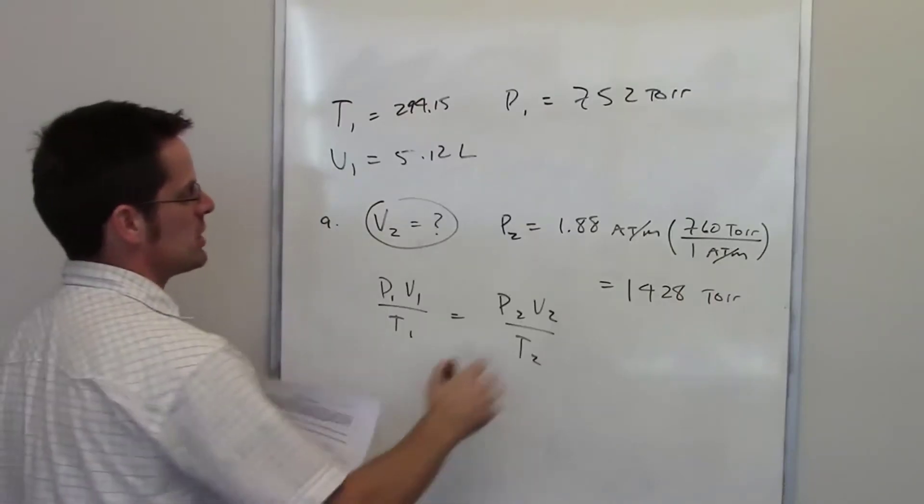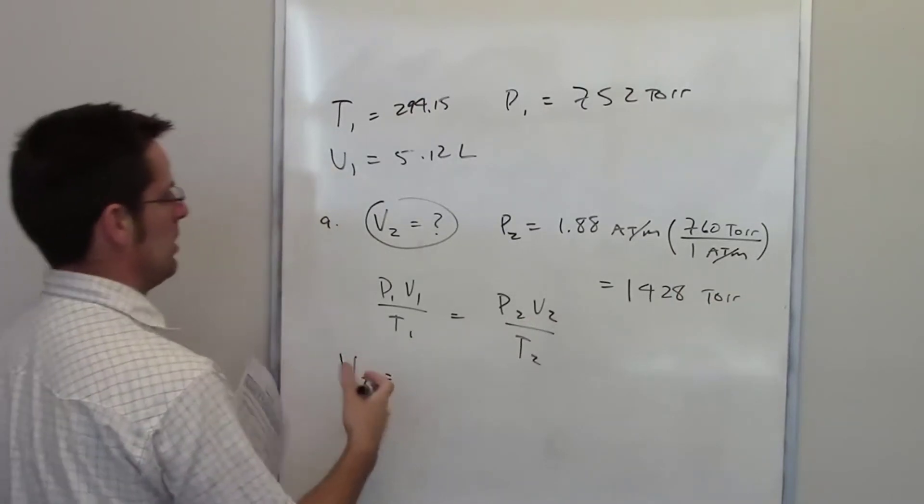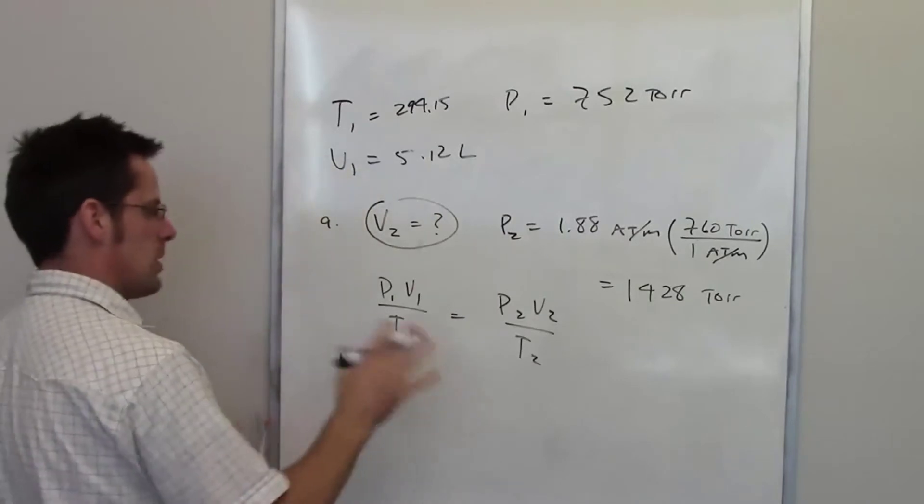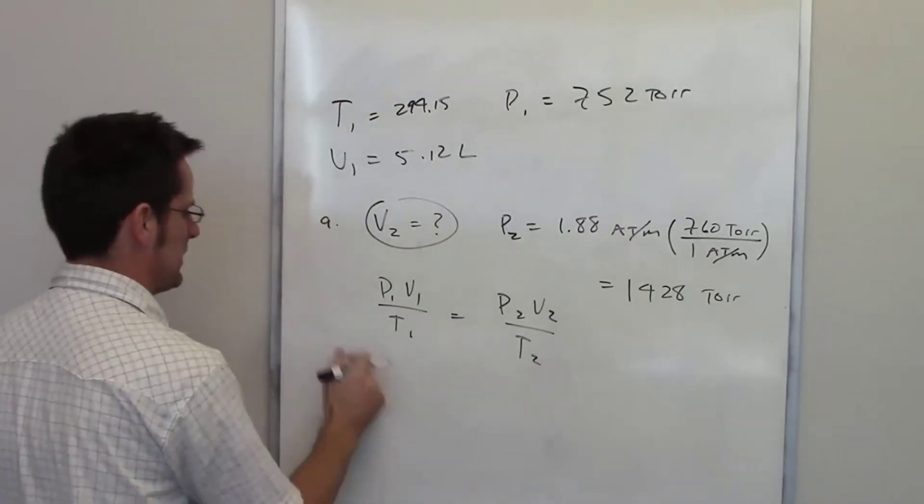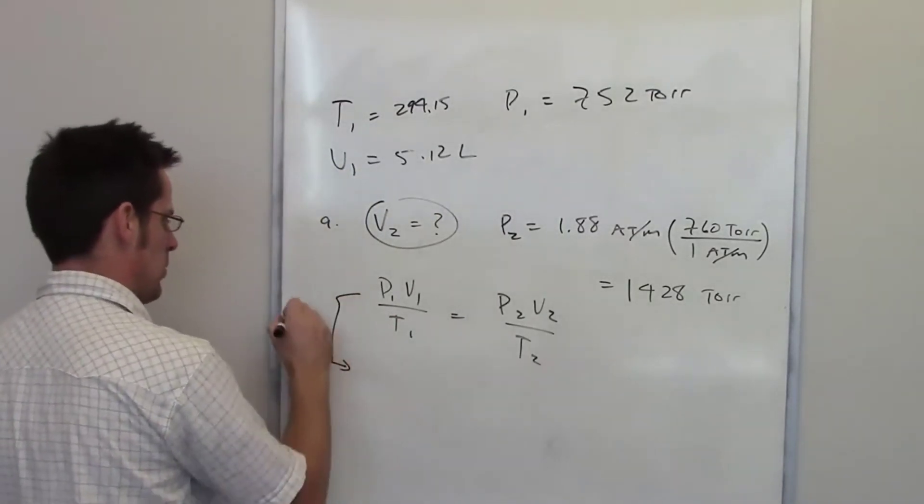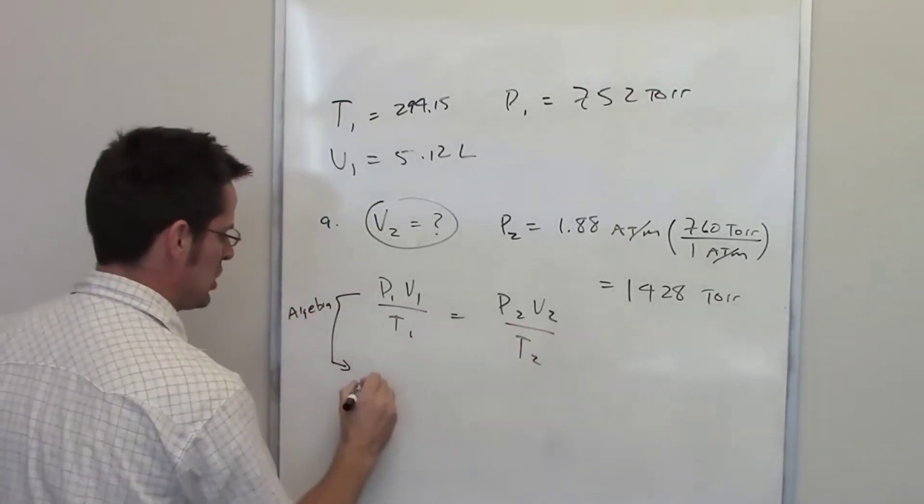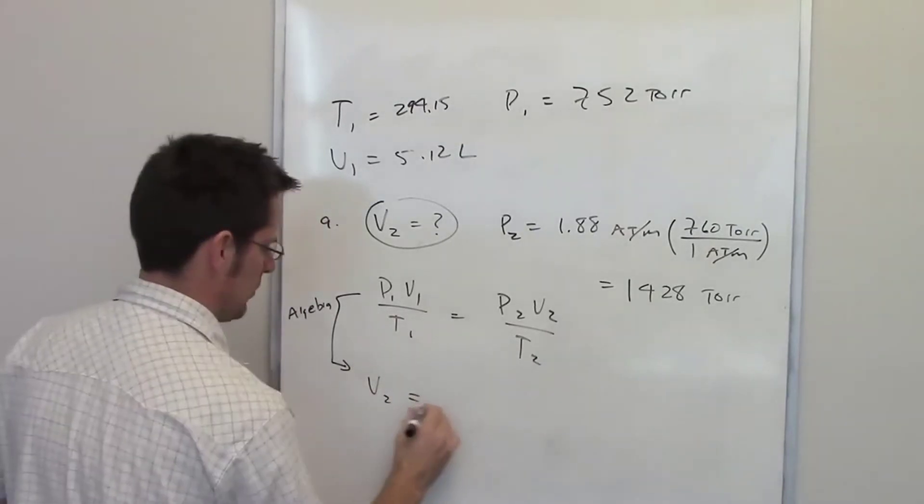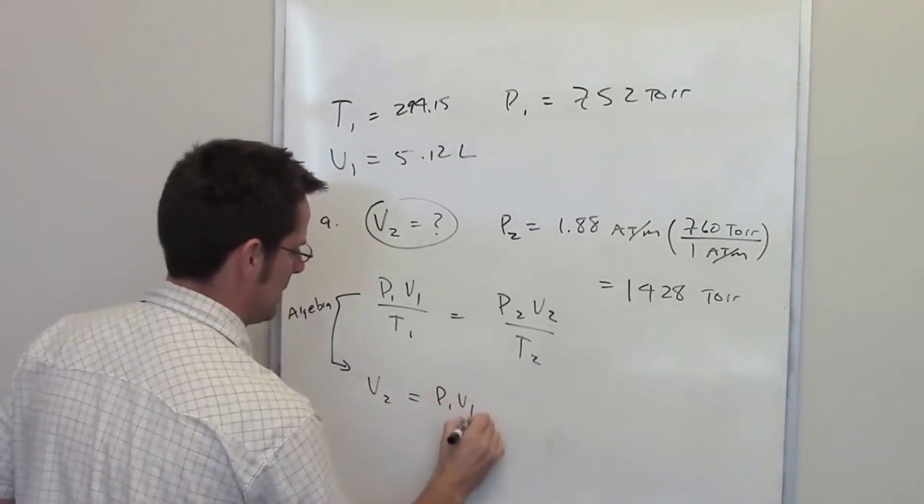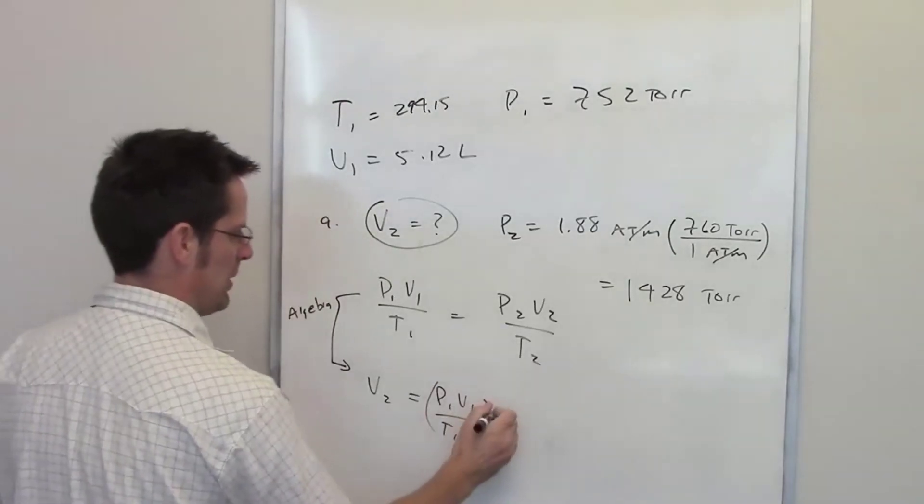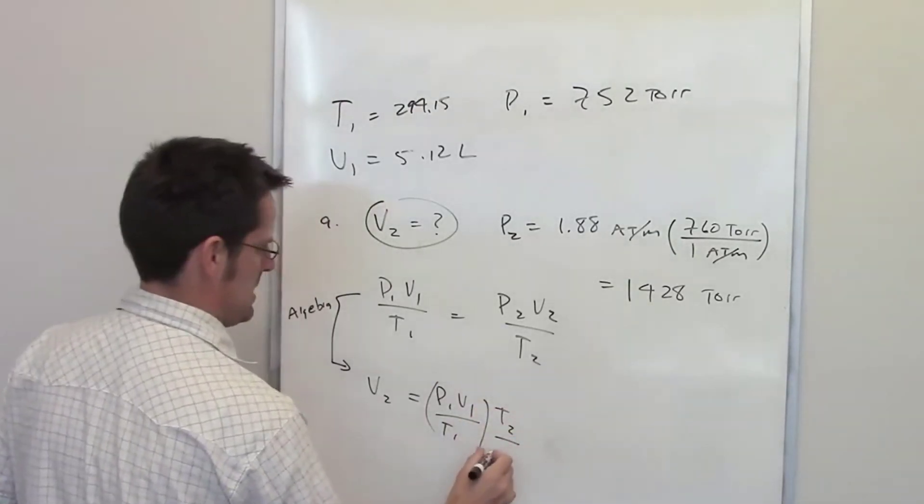The point of this problem is to determine what the final volume is going to be. So V2 is going to equal something when we monkey around with all these other parameters. So what I'm going to do is use the magic of algebra. I'm going to get V2 on one side, and then I'm going to get everything else on the other. So V2 is going to equal P1 multiplied by V1 divided by T1, all of that multiplied by T2 divided by P2.